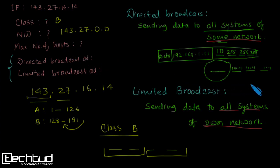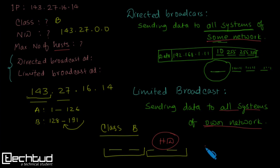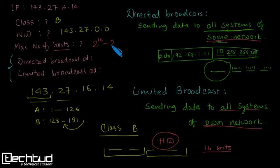To find the maximum number of hosts, since this is a Class B network, the remaining two octets are for the Host ID — that's 8 + 8 = 16 bits. We don't use the first and last addresses, so the maximum number of hosts is 2 to the power of 16 minus 2.